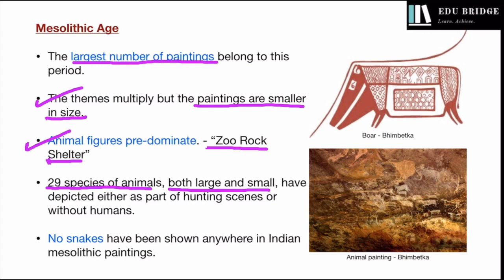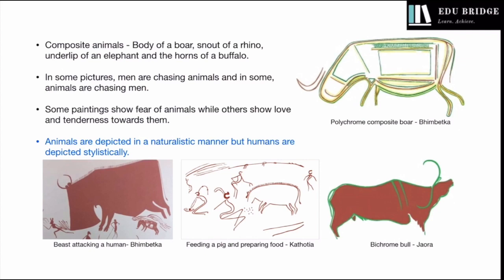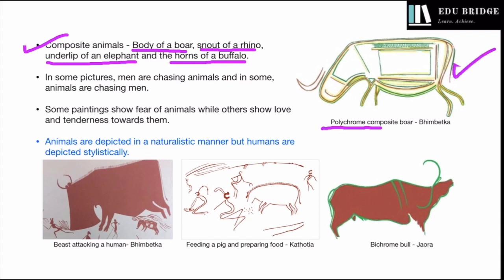A unique feature of Mesolithic paintings in India is that no snakes have been shown anywhere, which probably points towards a cultural taboo against their depiction. Some composite animals have also been depicted, such as an animal with the body of a boar, the snout of a rhino, the underlip of an elephant, and the horns of a buffalo. This polychrome composite boar from Bhimbetka is a notable example.